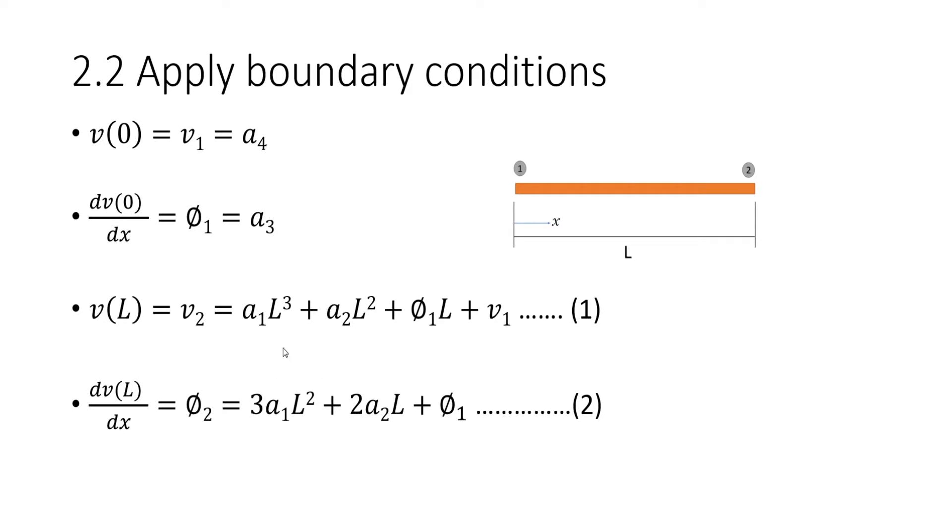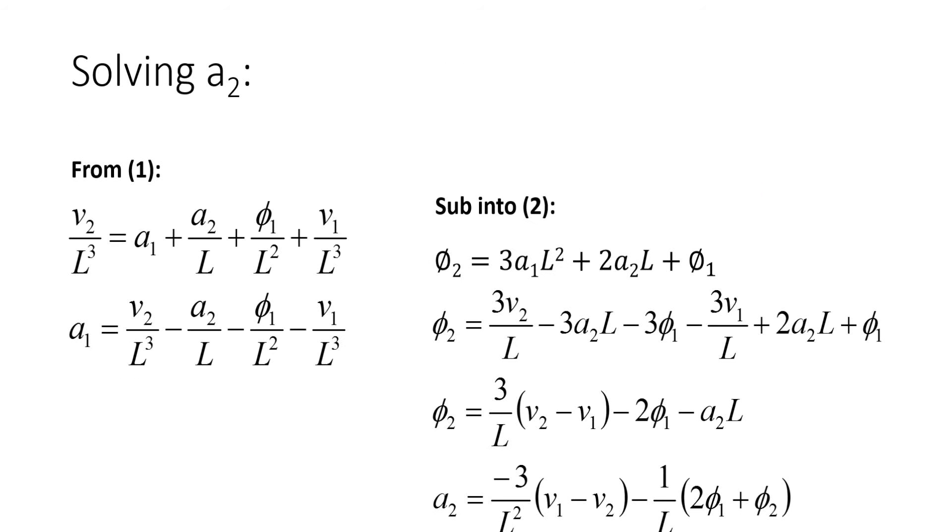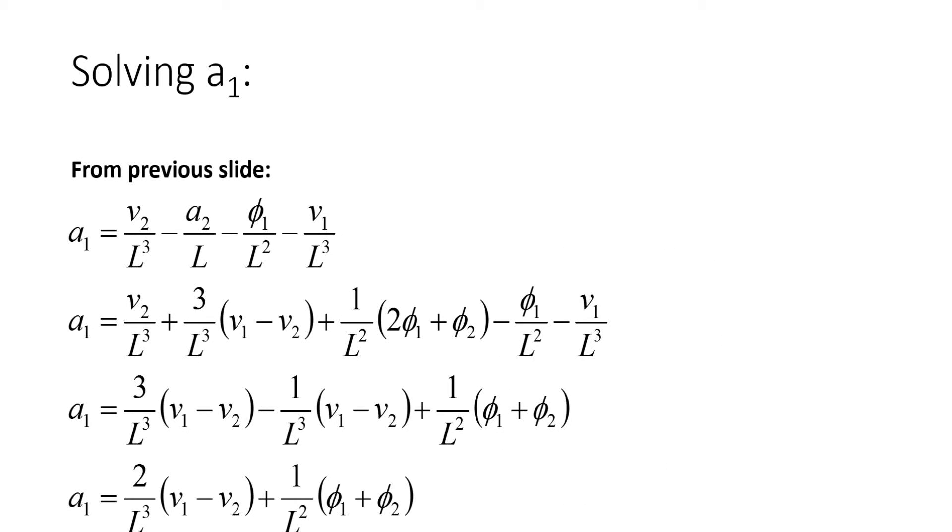Now we want to solve for A1 and A2 so we can get our full displacement function without any unknowns. So what we want to do is we want to firstly solve for A2. From equation 1 you can see this, and then rewrite it so A1 equals this. From the second equation, I replace A1 with this expression and then simplify it a little bit so I get A2 equals that. And then I put this value for A2 back into the A1 equation and simplify it again to get that equation for A1.